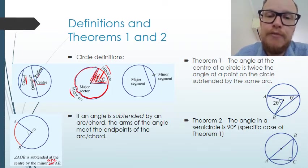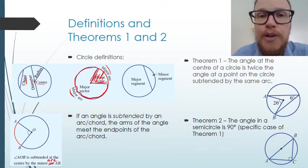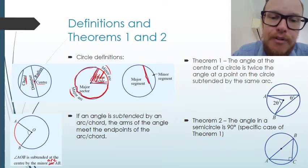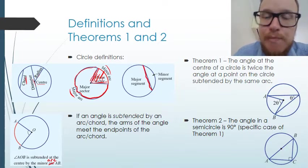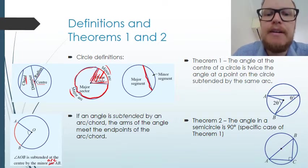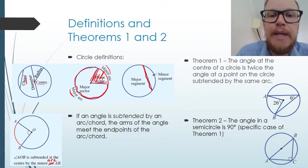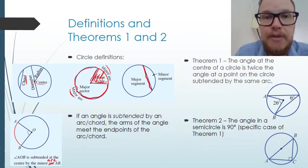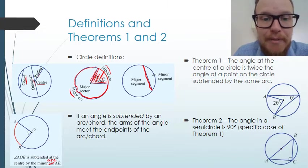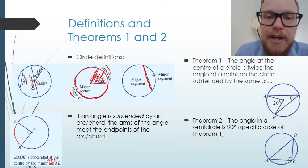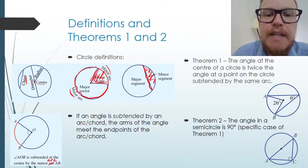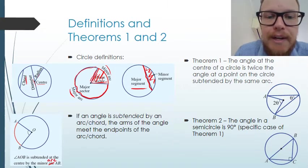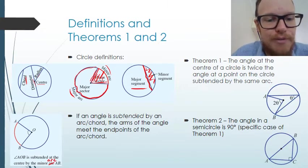If we have a chord that cuts a circle into two parts then we've split it into segments. A minor segment is less than half the circle and a major segment is greater than half the circle.